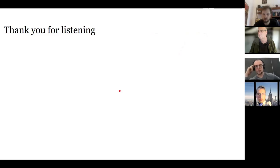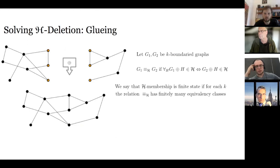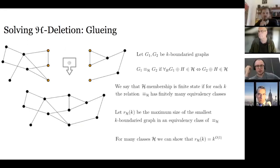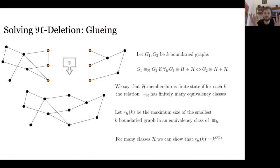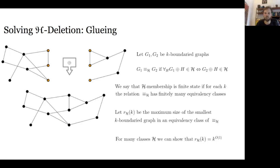Question from the audience: could you give a brief recap of how the equivalence classes are built for the gluing operation? Answer: For example, with H being bipartite graphs, you have two boundary graphs which are bipartite and ask whether you can find another k-boundary graph that when glued to G1 makes the result bipartite but when glued to G2 does not. For instance, attaching a degree-one vertex doesn't affect the equivalence class.